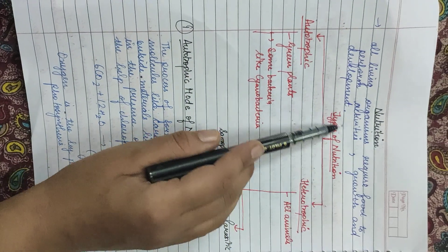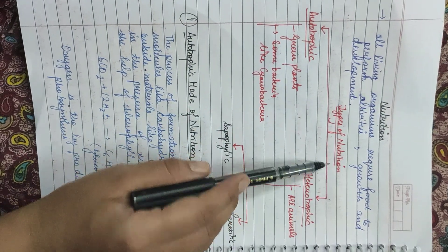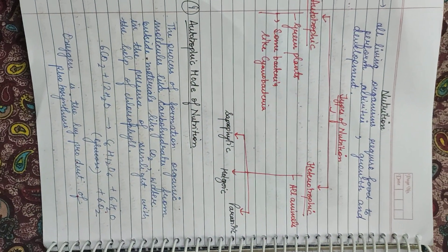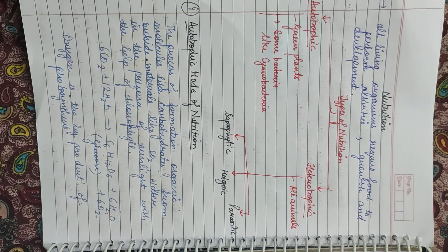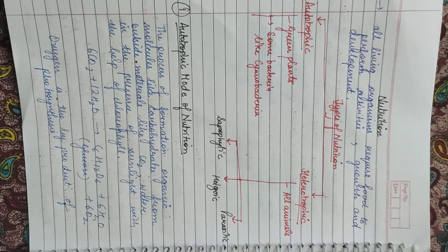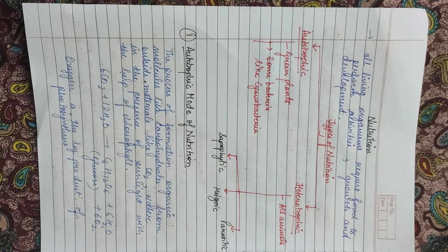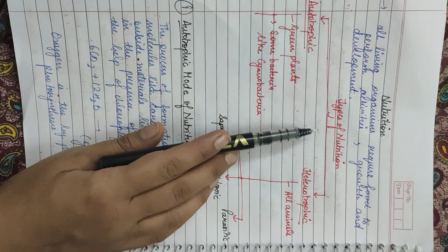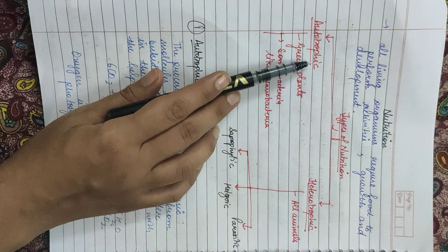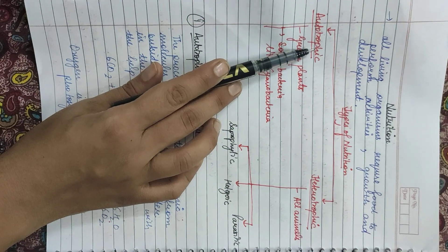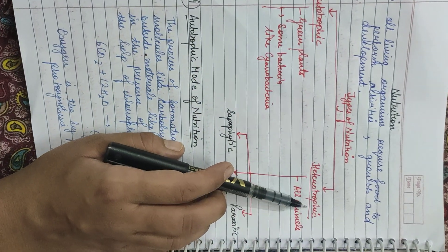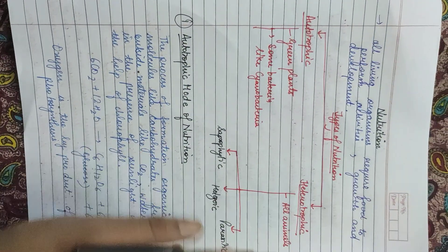Now, types of nutrition — meaning in what way an organism is obtaining its food. There are two types of nutrition: one is autotrophic and the other is heterotrophic.